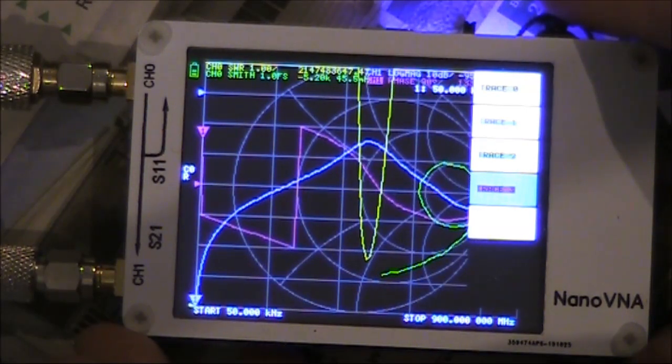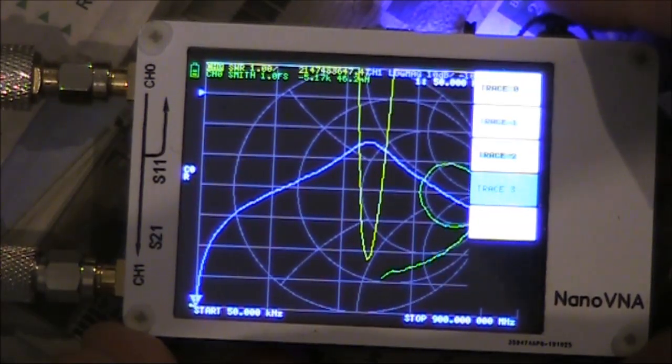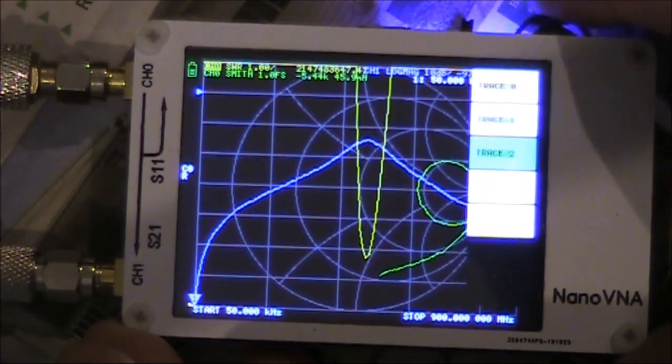Setting up the display, the screen is too cluttered. We can get rid of the phase display and the other thing we don't want is the Smith chart.